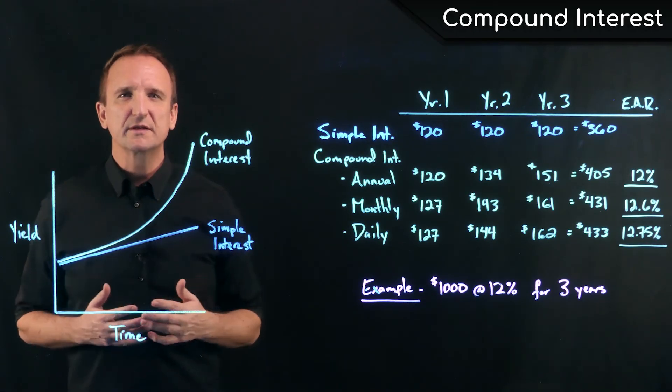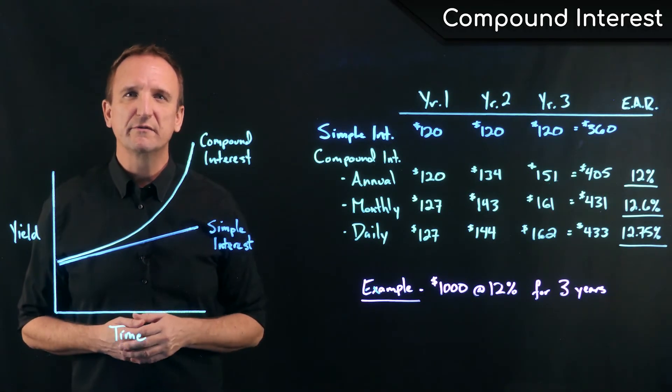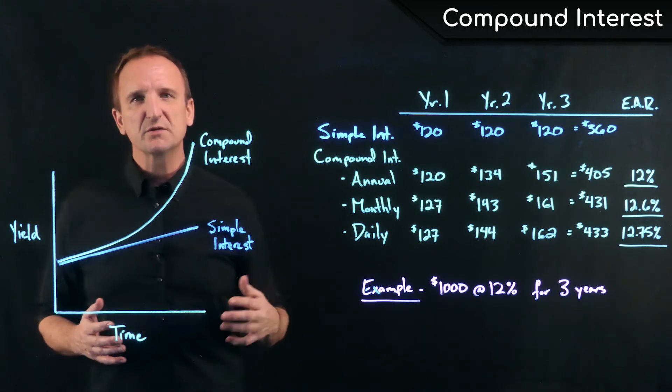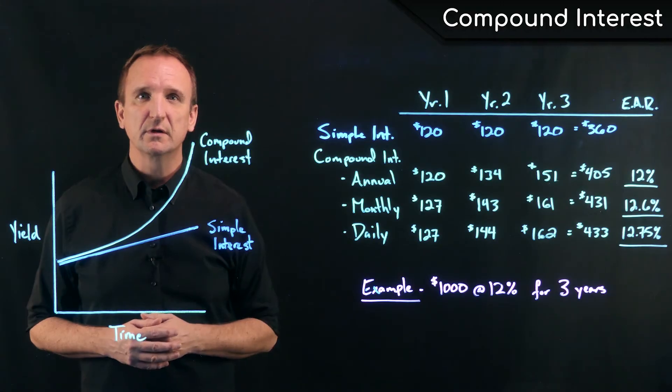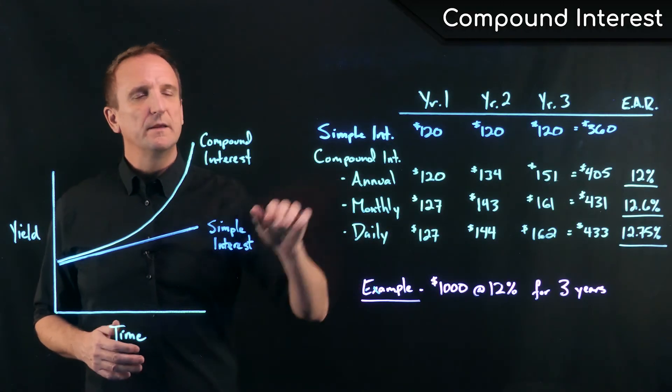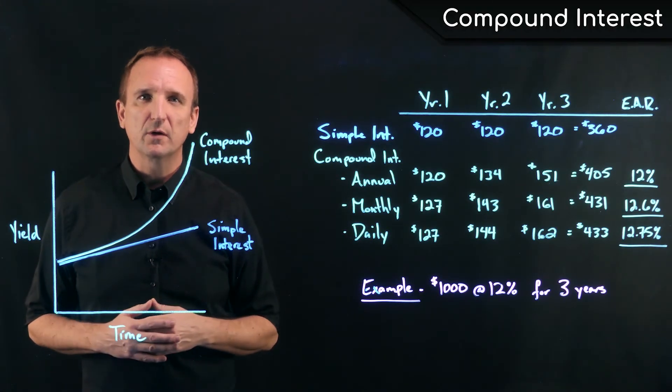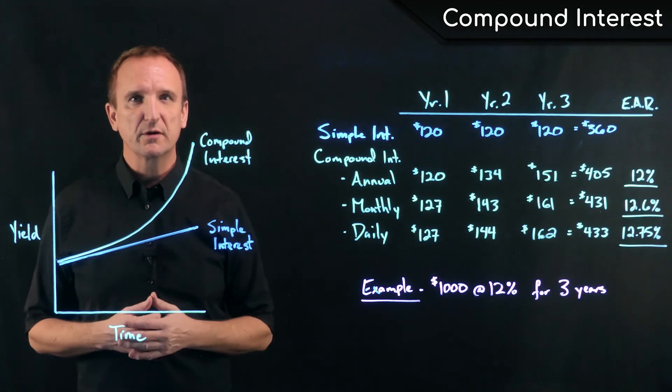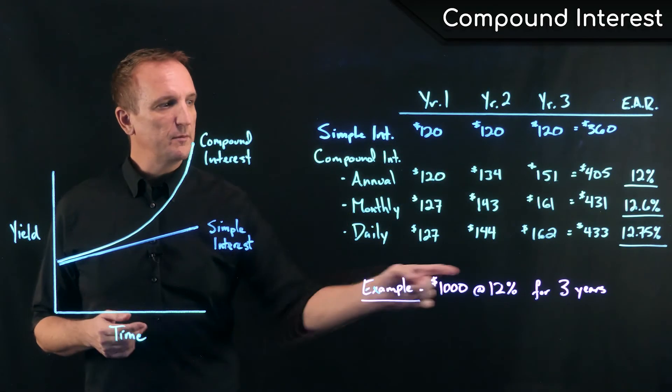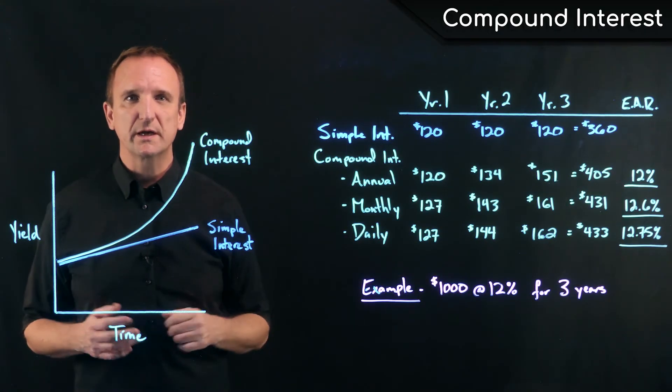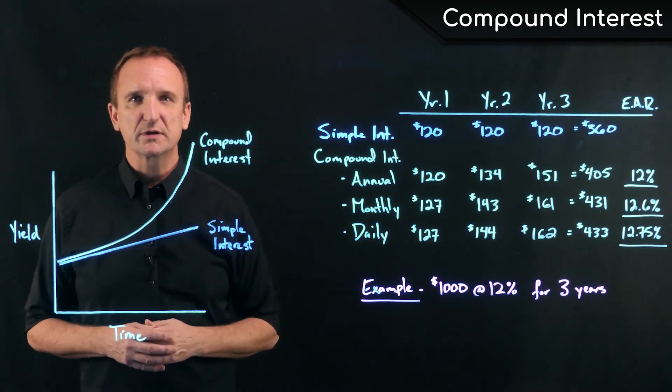The effect of this increase in the frequency of compounding intervals gives us what's known as the effective annual rate, or effective annual yield. And as we can see, in the case of annual compounding, where we get paid interest once per year, our annual yield is the same as the nominal rate - it's 12%.